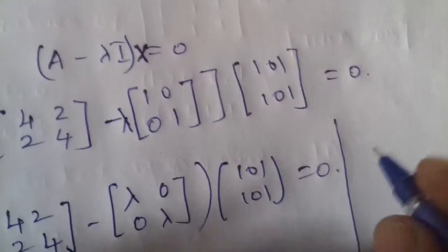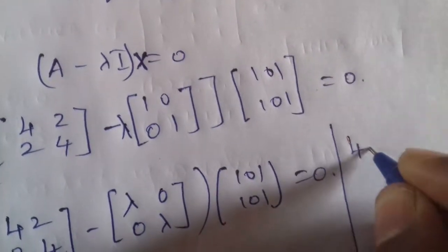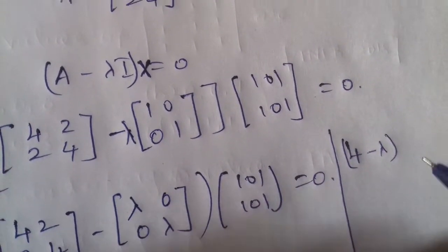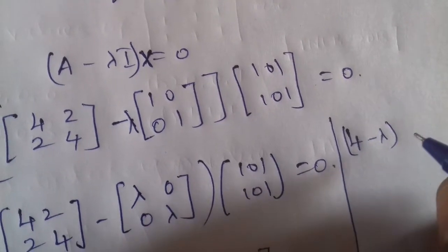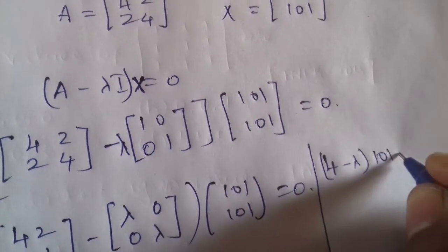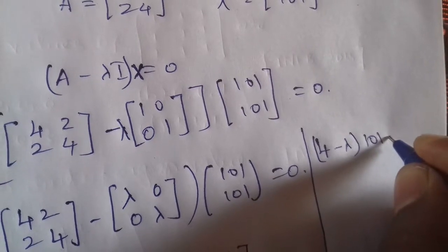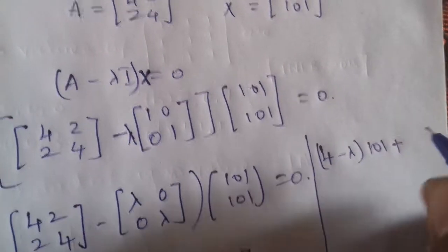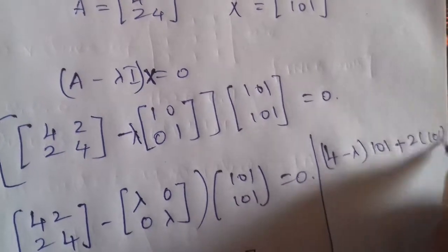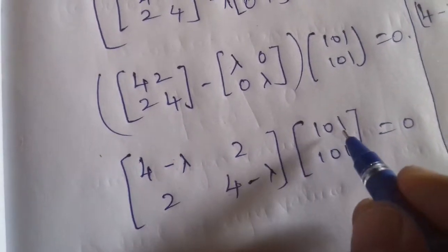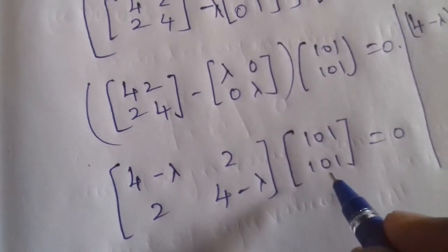Next step: expanding the multiplication gives (4 minus lambda) times 1 plus 2 times 1 equals 0.